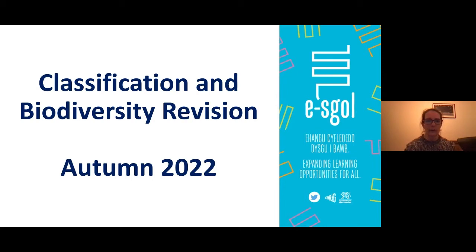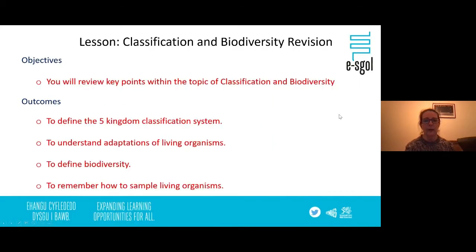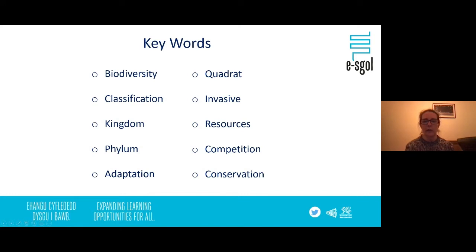Hello everybody and welcome to this session on classification and biodiversity. In this session we'll do a general recap of all the areas in this first section that you will see in year 11 and that you may meet in your exam. Here are our objectives for this first part of the session: we're going to be looking at the Five Kingdom classification system, adaptations of living organisms, defining biodiversity, and looking at how we sample living organisms.